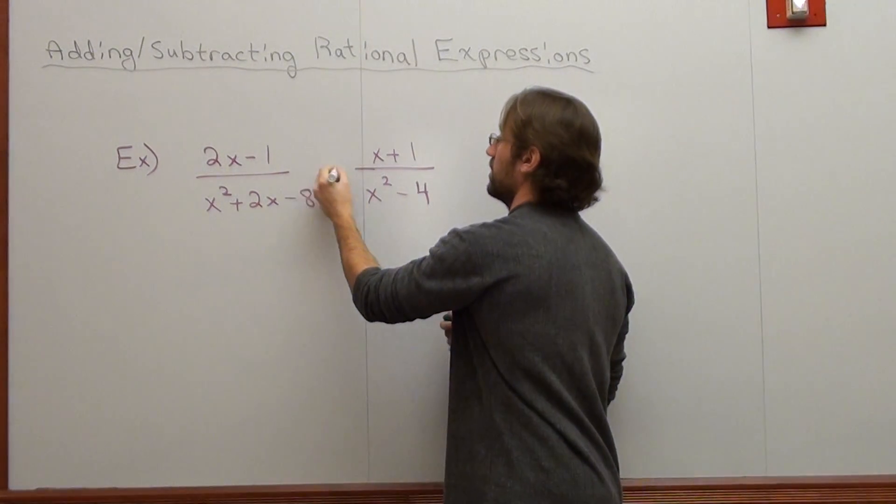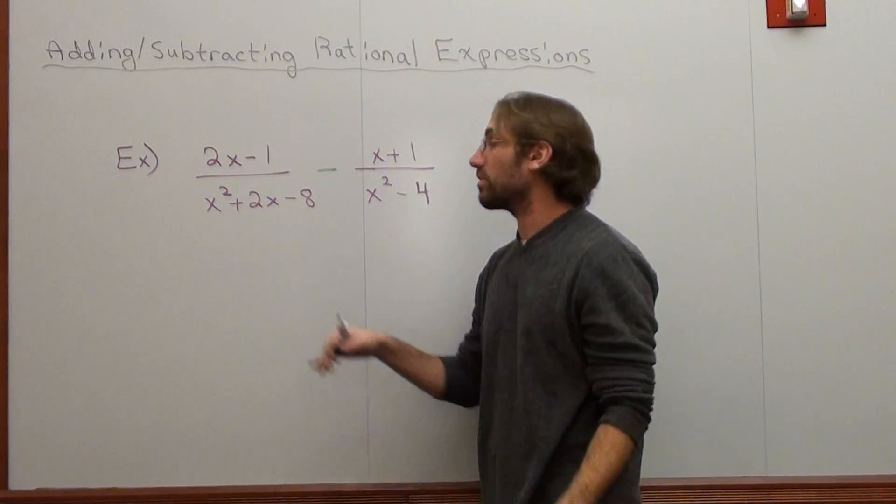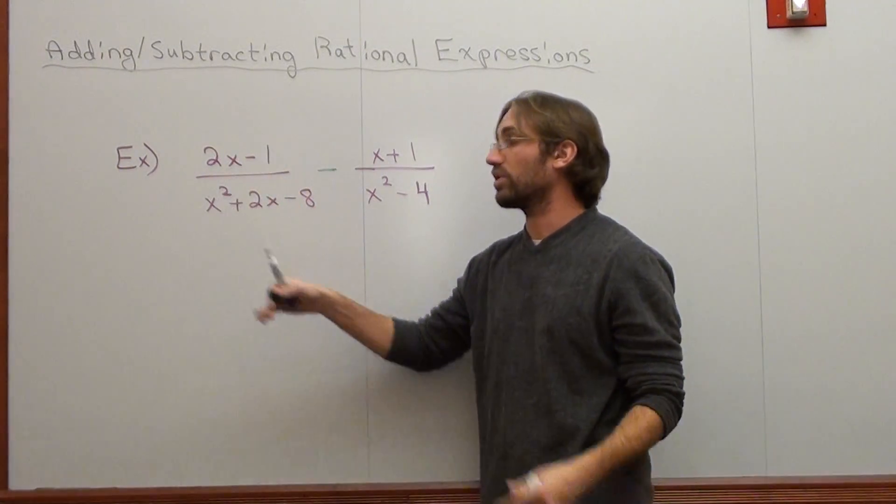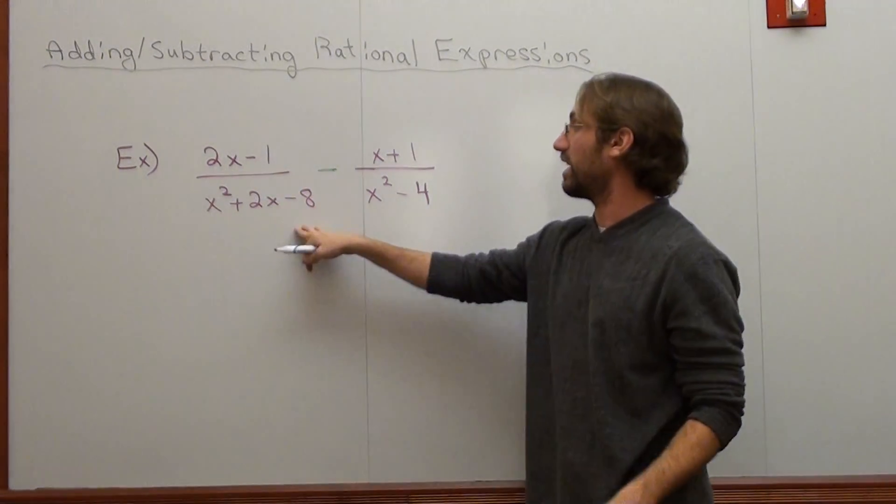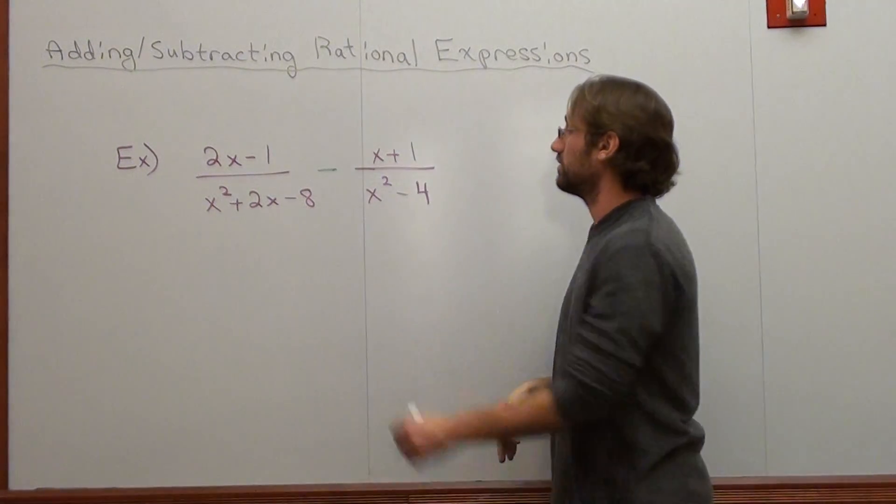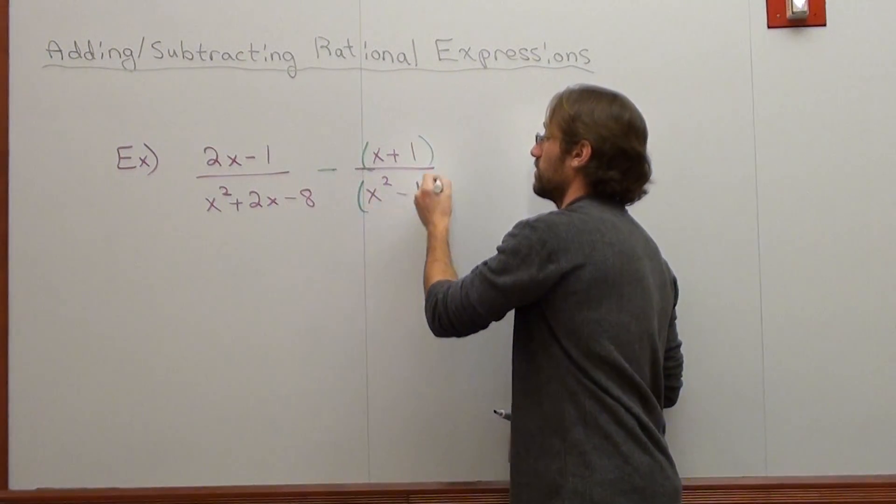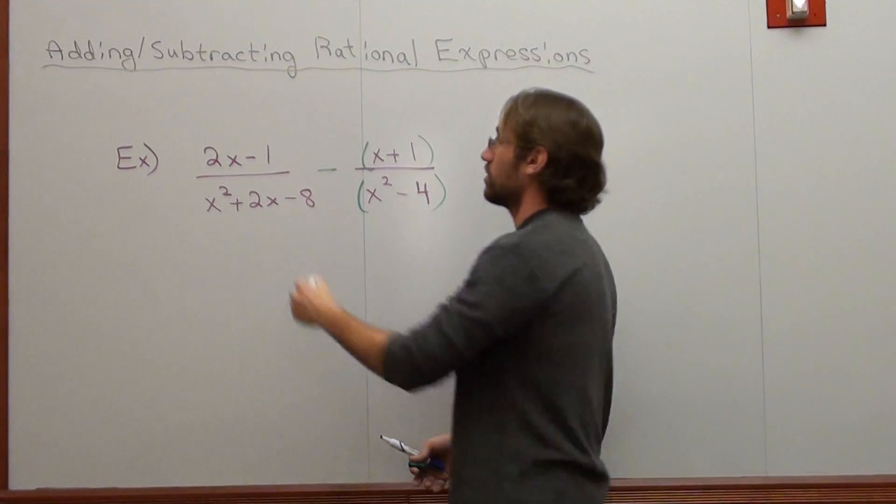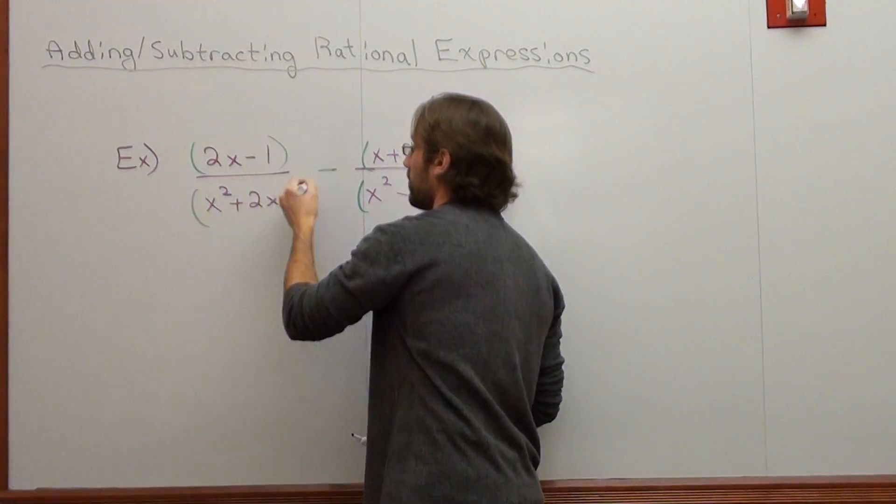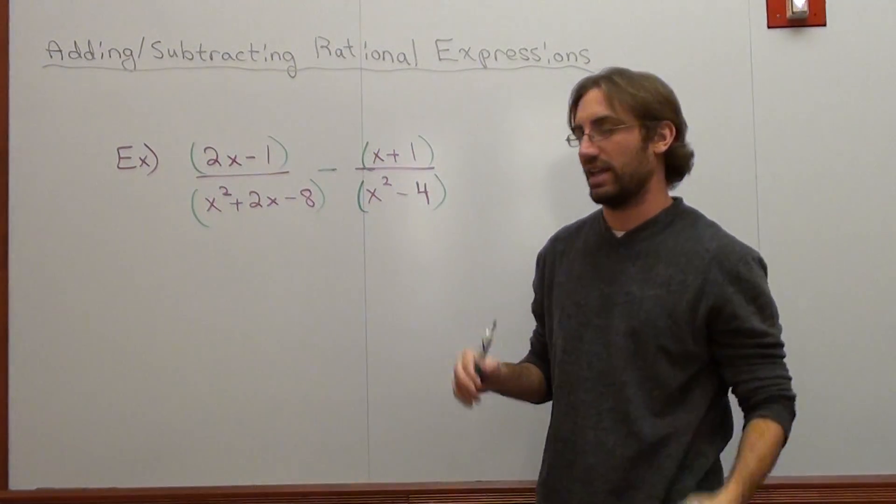That's a subtraction. What it reads is 2x minus 1 over the quantity x squared plus 2x subtract 8, all subtracted by quantity x plus 1 times quantity x squared minus 4. It's good to think about it like that because then people aren't going to try canceling things that they can't cancel right away.